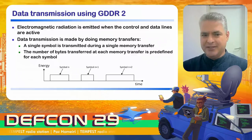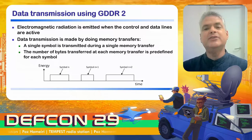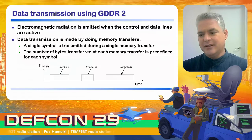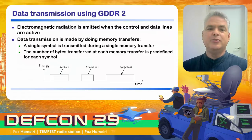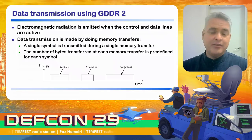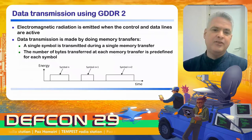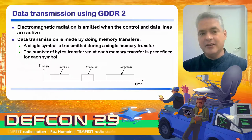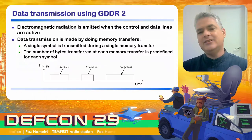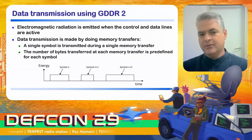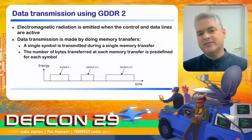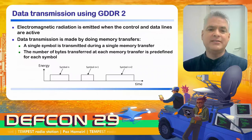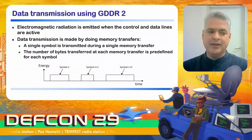The electromagnetic radiation is emitted when the control and data lines are active and not emitted when inactive. There is an almost linear connection between the time it takes to write a batch of bytes and the size of that batch. So a small volume of bytes gives a short operation, and a large volume gives a long operation — and that's the key to controlling symbol length. Whenever a memory transfer is performed, a symbol is transmitted, and its duration is predefined by the amount of bytes being read or written.